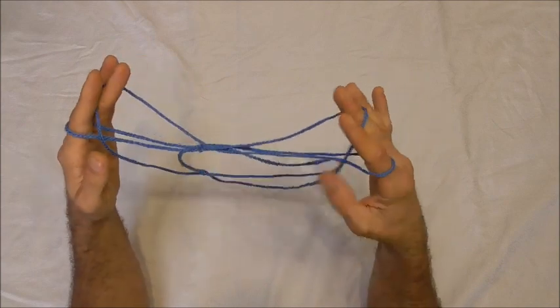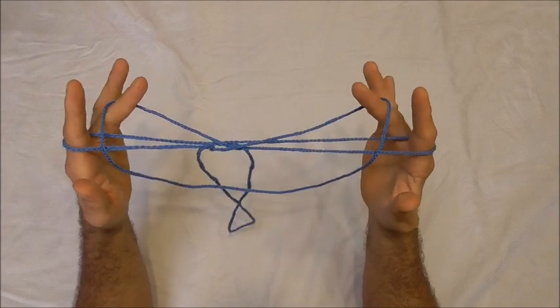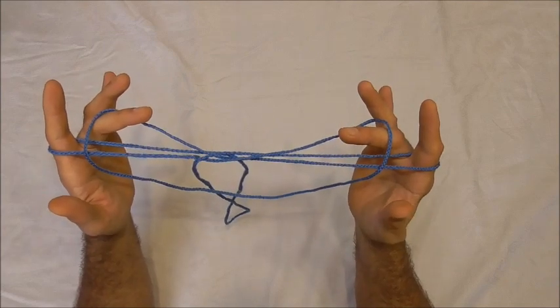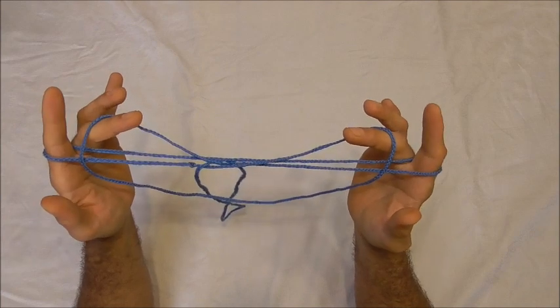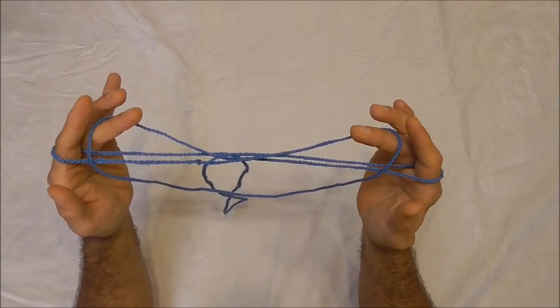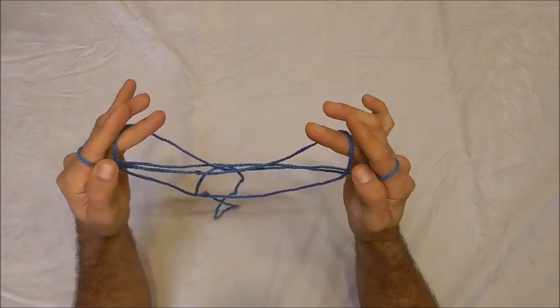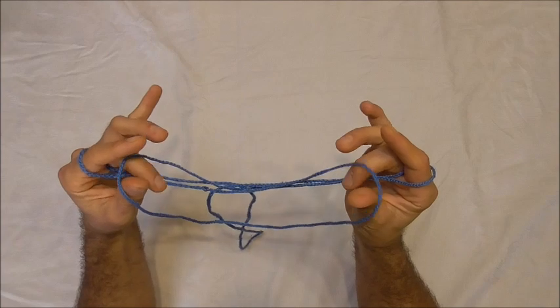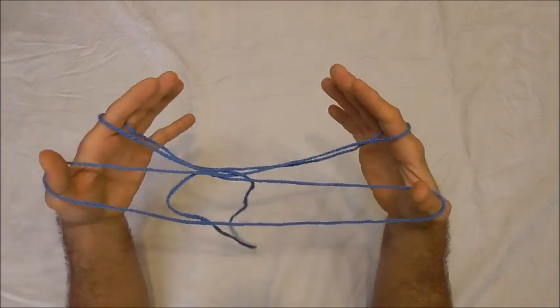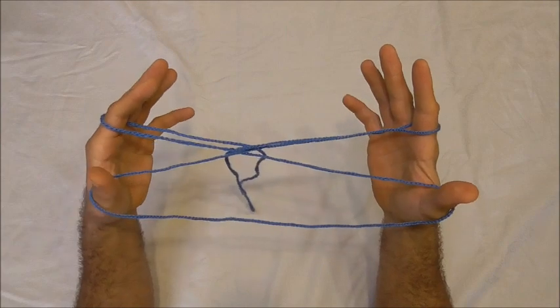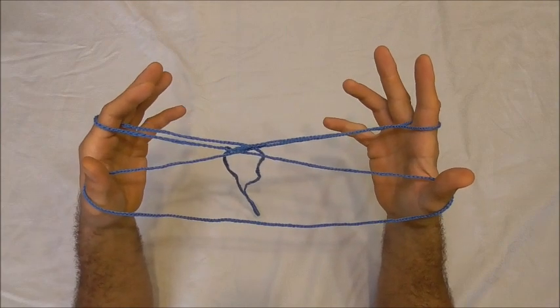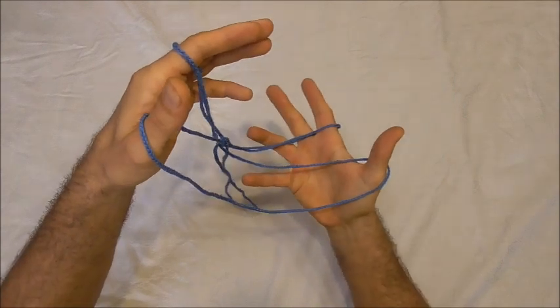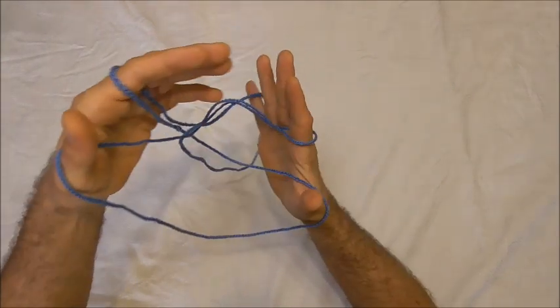And then I want to transfer that middle finger string to the thumbs so I'm just going to insert my thumbs into that middle finger loop from below and then release the middle finger. Then I want to pick up that dangling loop there with my little fingers so I just want to put my little finger into that loop and pick that loop up.